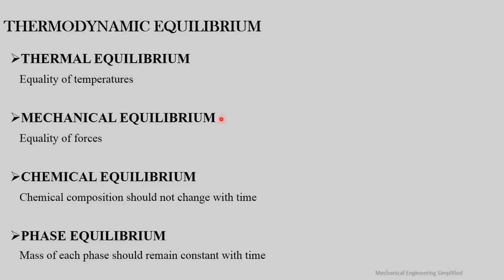Chemical equilibrium means the chemical composition of the system should not change with time — no chemical reactions should occur within the system. Phase equilibrium means the mass of each phase should remain constant with time: if a system comprises more than one phase, the mass of each phase should not change.